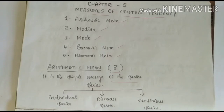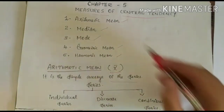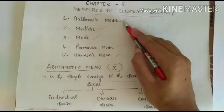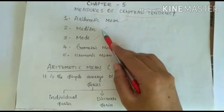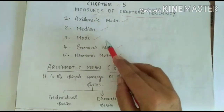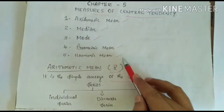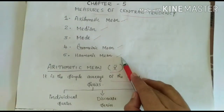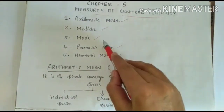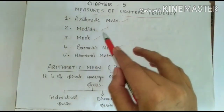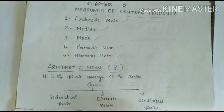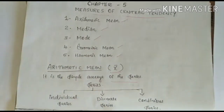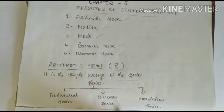There are 5 types of measure of central tendency. The first one is arithmetic mean, second one median, mode, geometric mean and harmonic mean. In these 5 measures of central tendency, the first three — mean, median and mode — are very important in your syllabus. So we are moving on to the next topic: arithmetic mean.